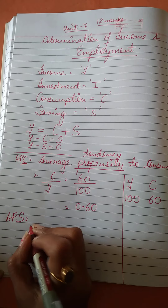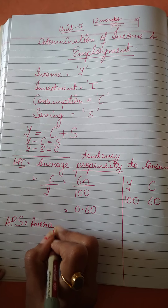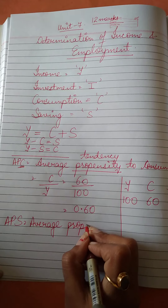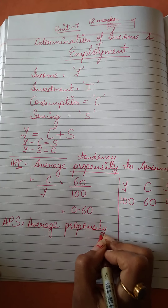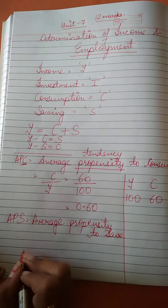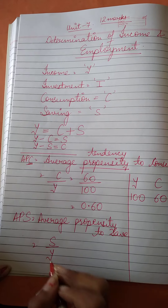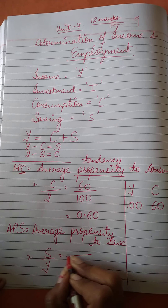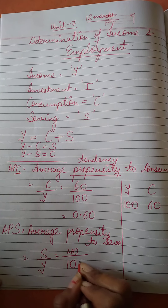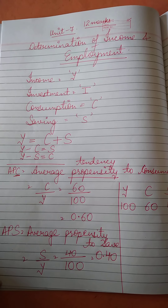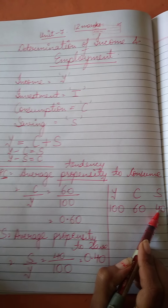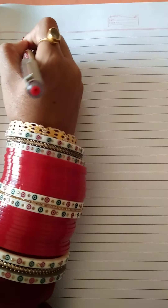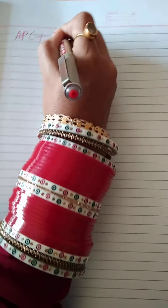Next is APS, that is Average Propensity to Save. It tells us what part of income we are saving. For example, out of one hundred, forty is saved, so APS is 40 upon 100, which equals 0.40. So APC plus APS always equals one.